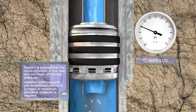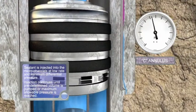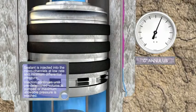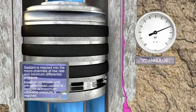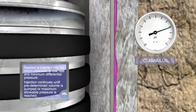Sealant is injected into the microchannels at low rate and minimum differential pressure. Injection continues until predetermined volume is pumped or maximum allowable pressure is reached.